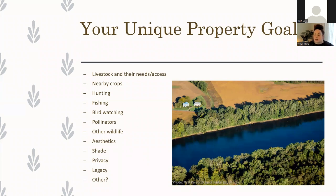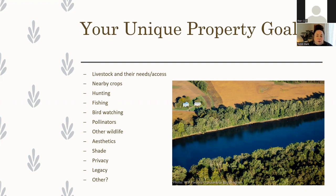Riparian forest buffers can take on a lot of different forms. We always want to be planting trees and shrubs in the immediate riparian area — that area immediately adjacent to the stream bank. The first 15 feet are super critical, but all the way out to 300 feet is what is considered the riparian area. What is most important when designing your buffer as a landowner is your unique property goals.